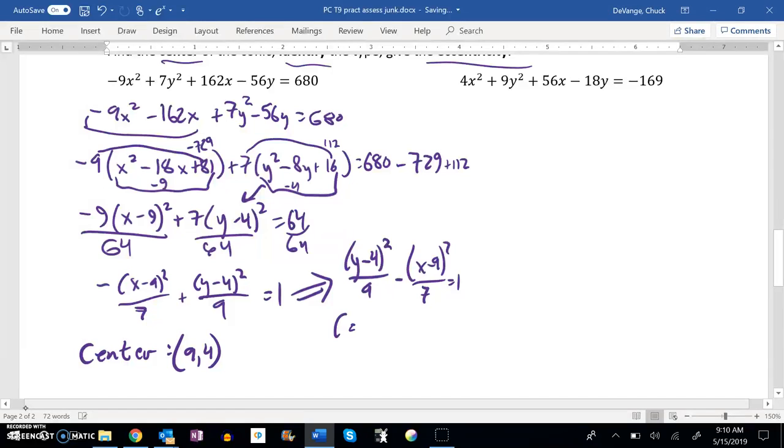I know that c squared is a squared plus b squared. So 9 plus 7. Oh, c squared is that. Sorry. So c squared is 16. So c must be 4.